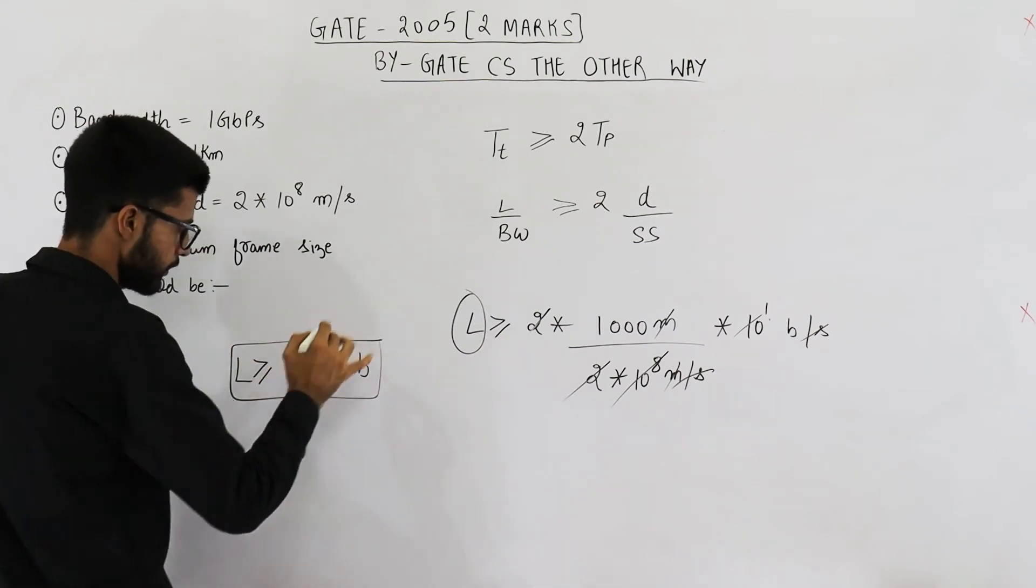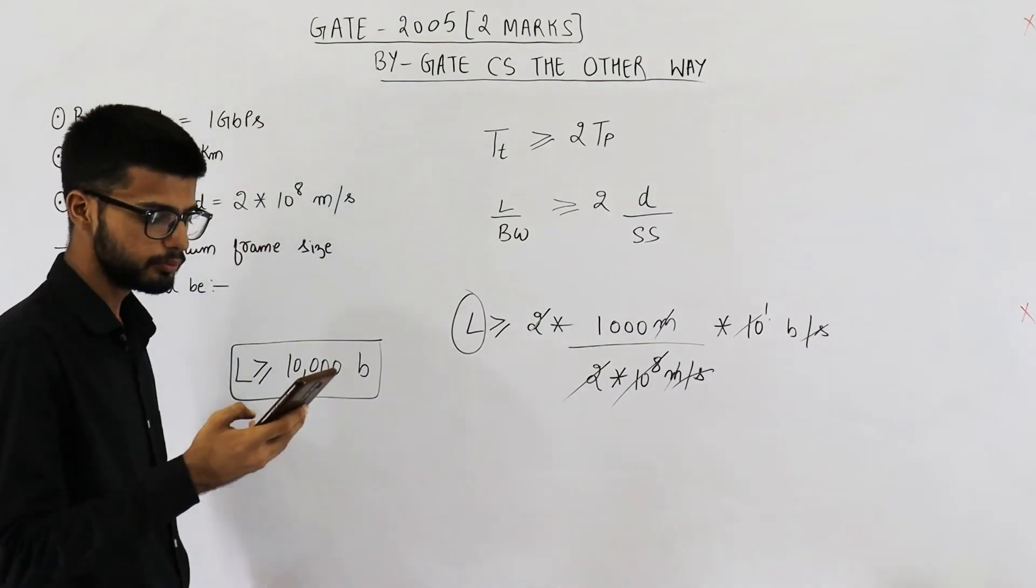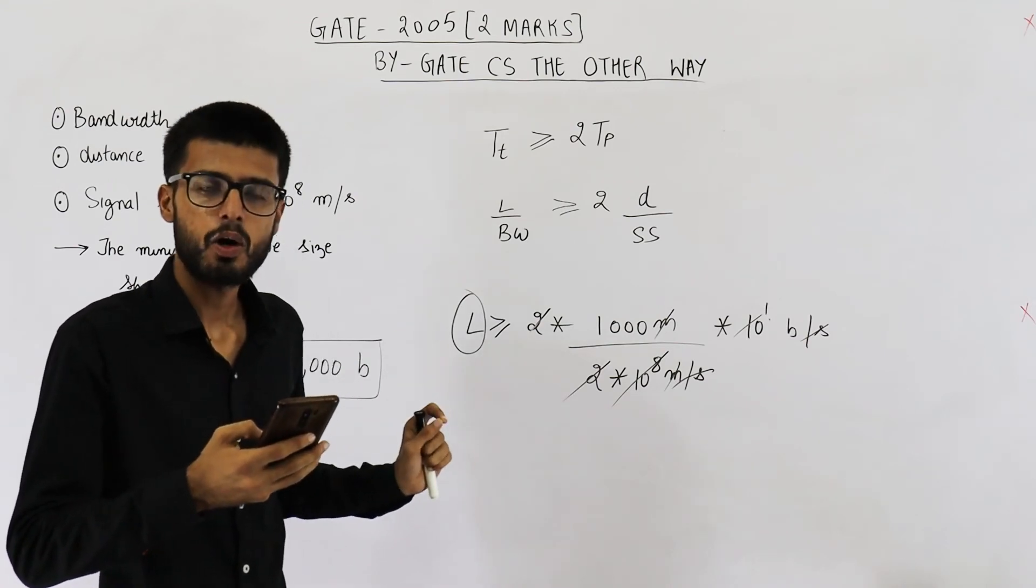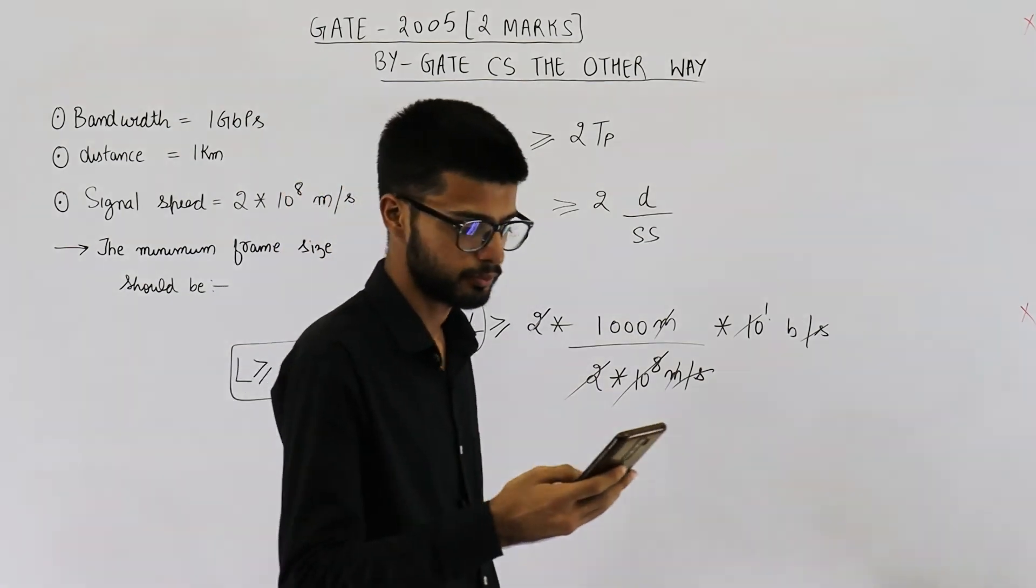So the option which is correct is option A which is 10,000 bits. Please don't take option B. Option B says 10,000 bytes. That is incorrect.